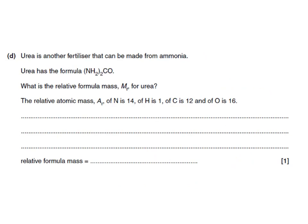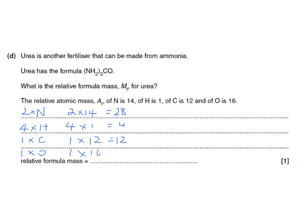Here's an exam question: urea is a fertiliser that can be made from ammonia. Urea has the formula (NH2)2CO — what's the relative formula mass? There are two nitrogens, four hydrogens (two in the bracket multiplied by two), one carbon, and one oxygen. Two nitrogens at 14 each give 28; four hydrogens at 1 each give 4; one carbon is 12; one oxygen is 16. Adding all those up gives a relative formula mass of 60.